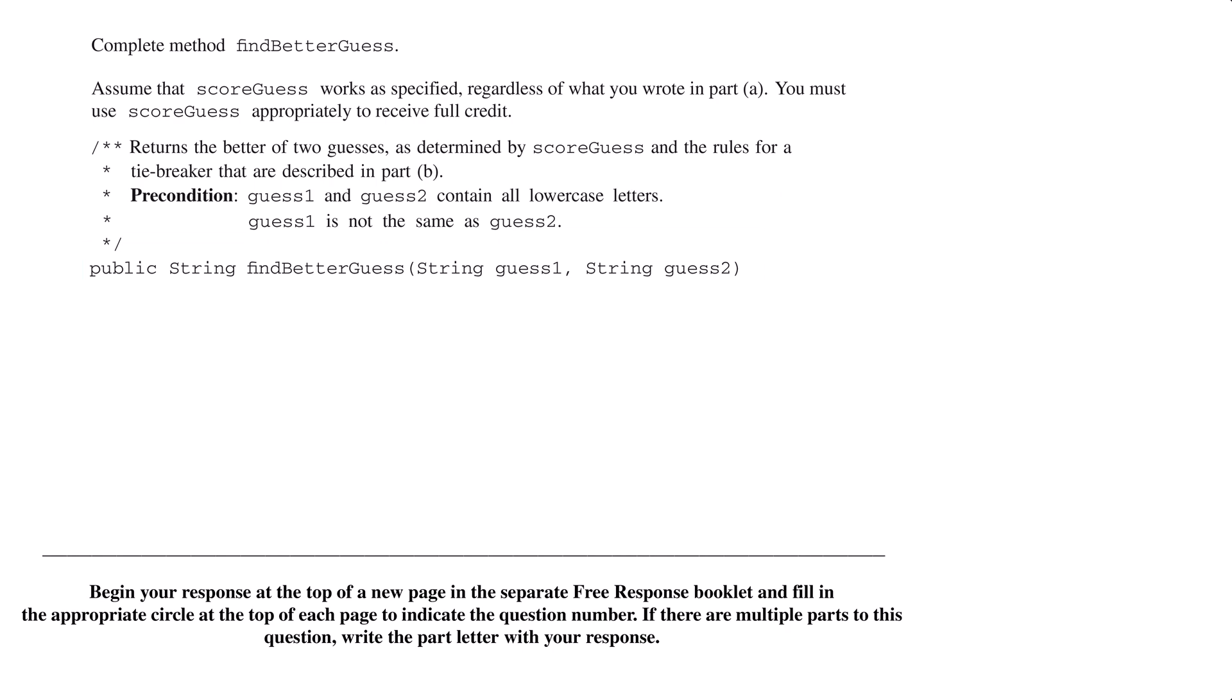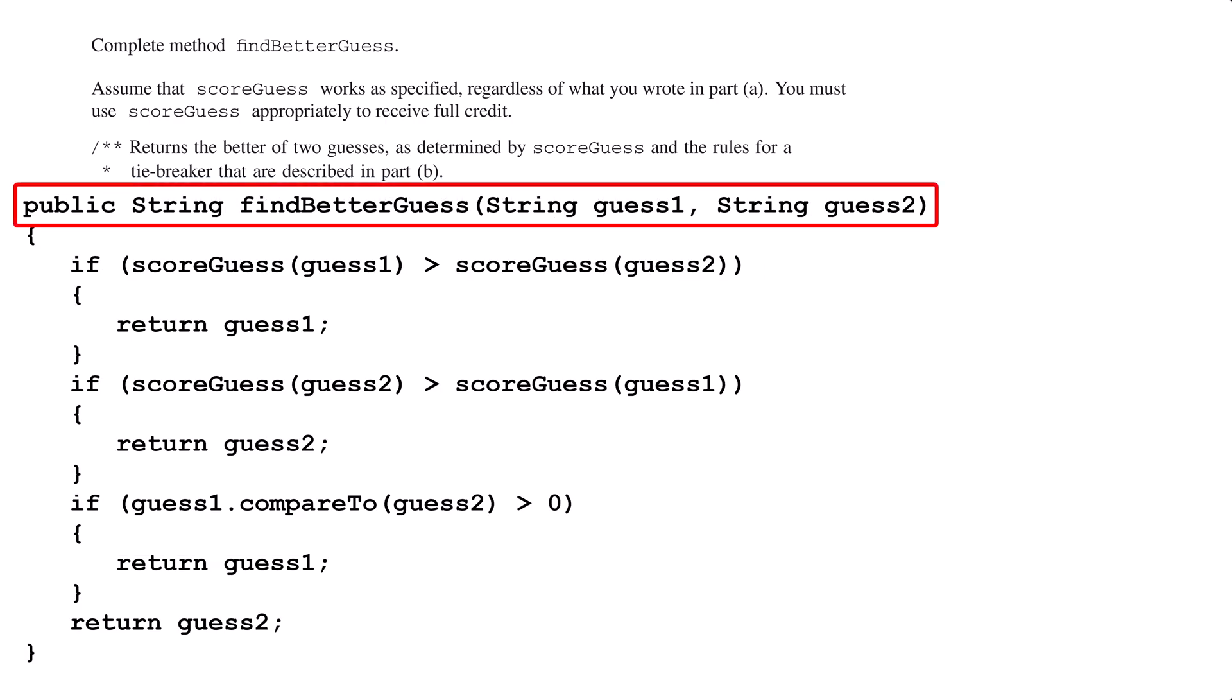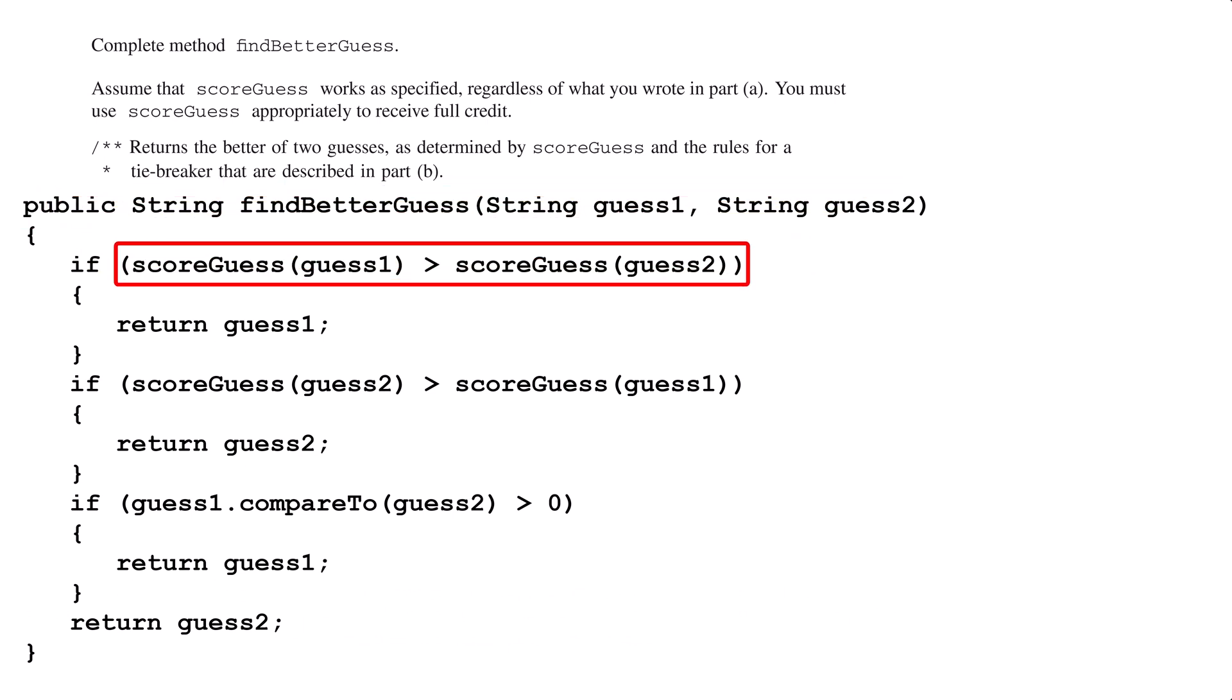Let's look at the official solution. The problem already started us off with the method header. We first compare the scores of the two guesses using the score guess method. If guess1 has a higher score than guess2, it is the better guess and we return it. If guess2 has a higher score than guess1, it is the better guess and we return it.